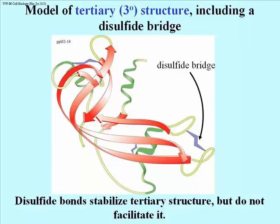The important thing about disulfide bridges is that they stabilize three-dimensional structure — they don't facilitate it. There's no attraction between the sulfhydryl groups of un-oxidized cysteines. But if they come close together as a result of all those other weak interactions, you get this strong covalent bond that then stabilizes the three-dimensional structure.